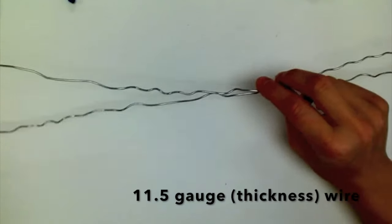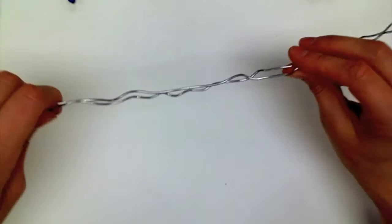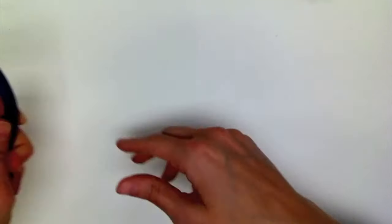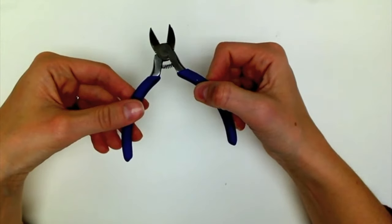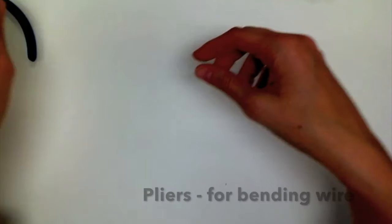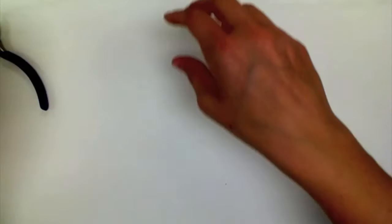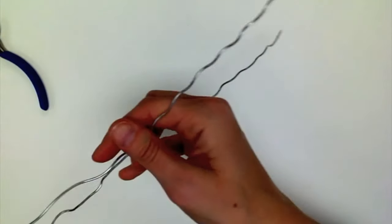Materials you'll need for your armature are 11.5 gauge wire, clippers to cut the wire, and pliers for bending or twisting the wire. The blue-handled pliers also have clippers at the base.